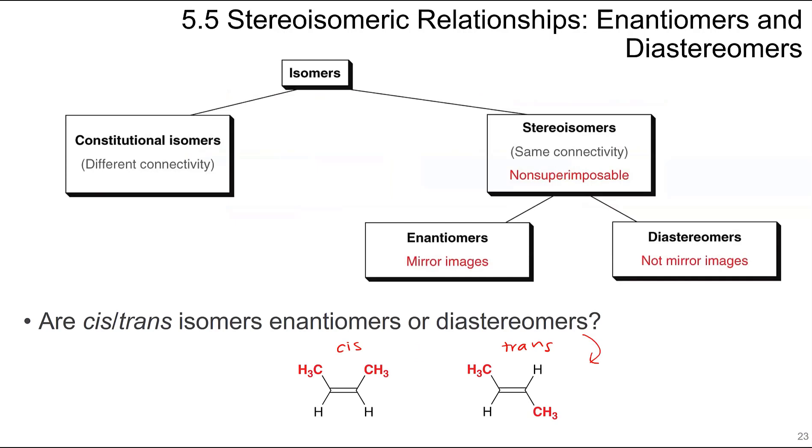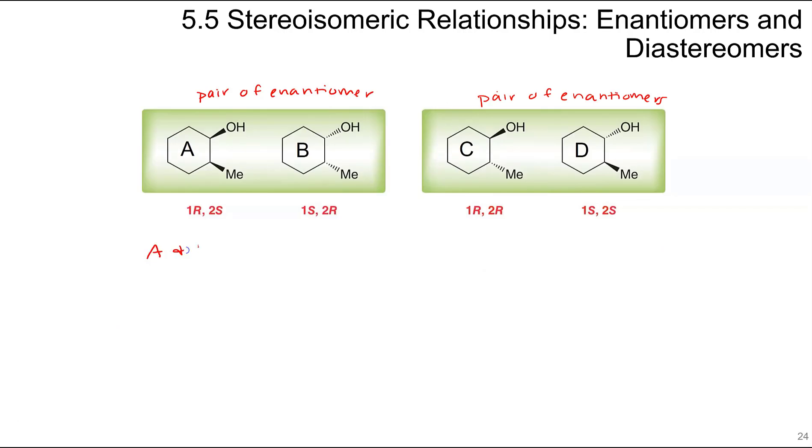If it falls into that last umbrella, it's not an enantiomer, it has to be a diastereomer. A and B are enantiomers. A and C, these are not enantiomers of each other. This OH is wedged on both of these, but it's not the same or the mirror image. So these are diastereomers. A and D are also diastereomers.